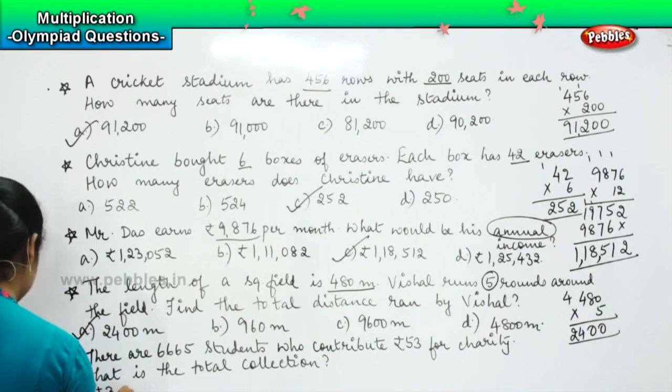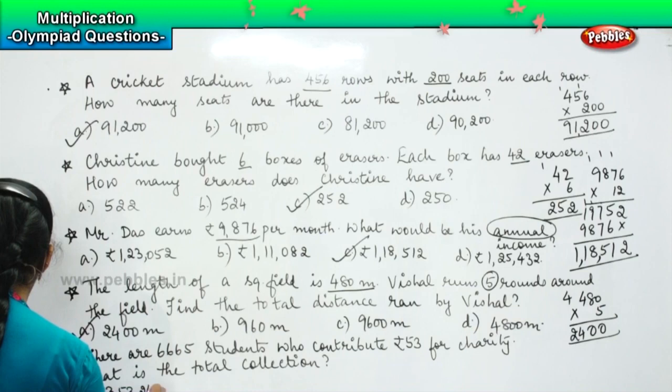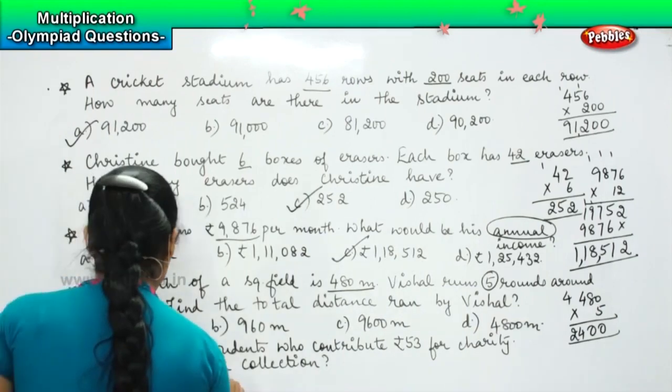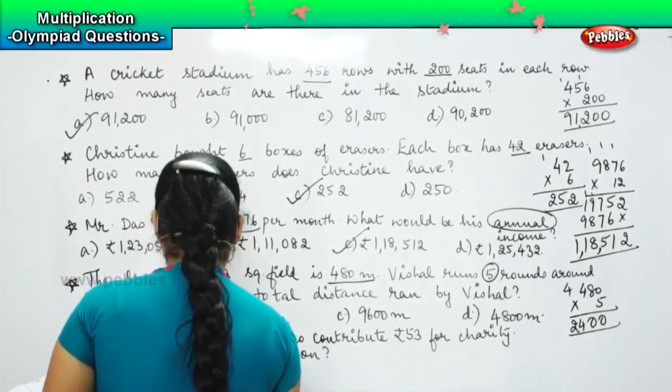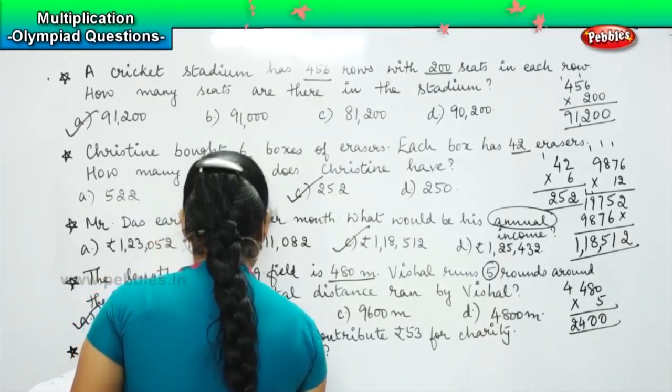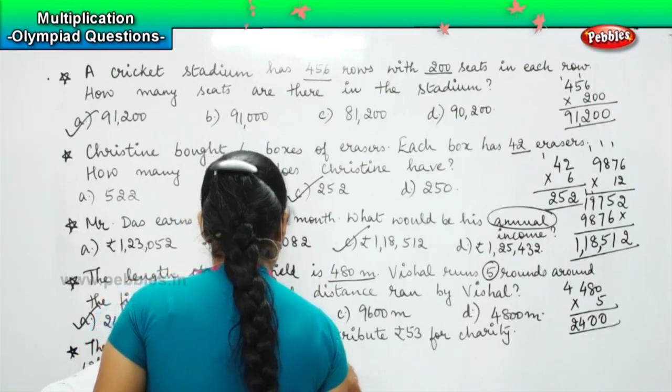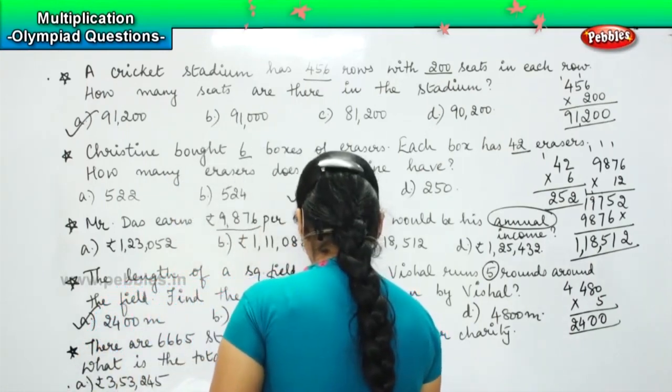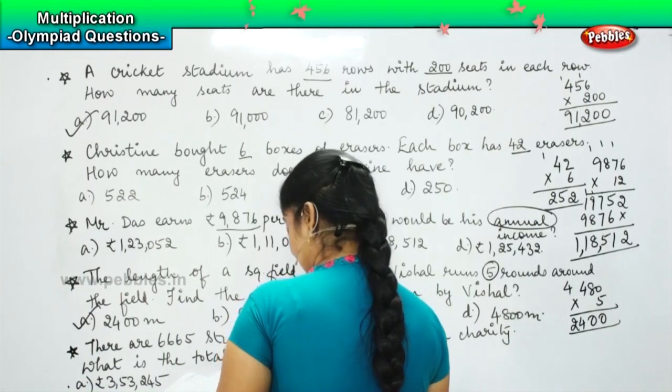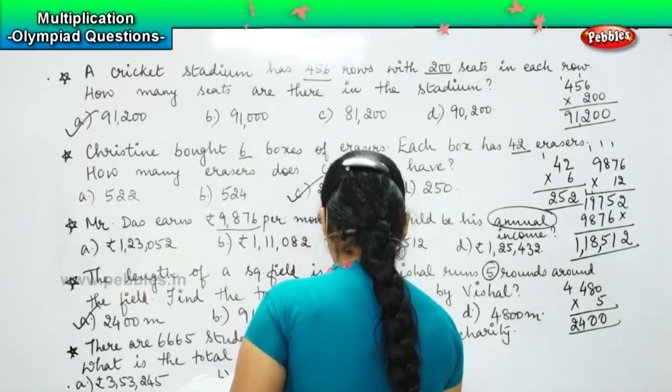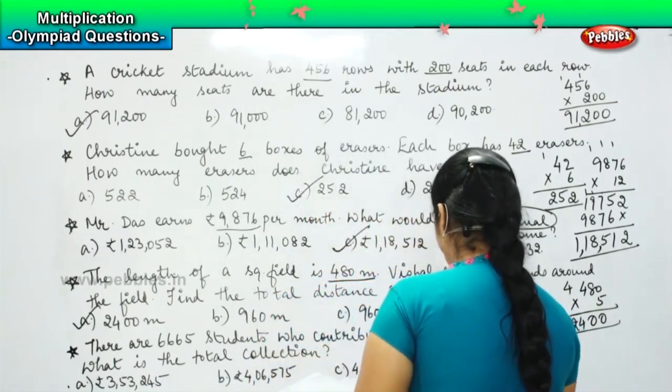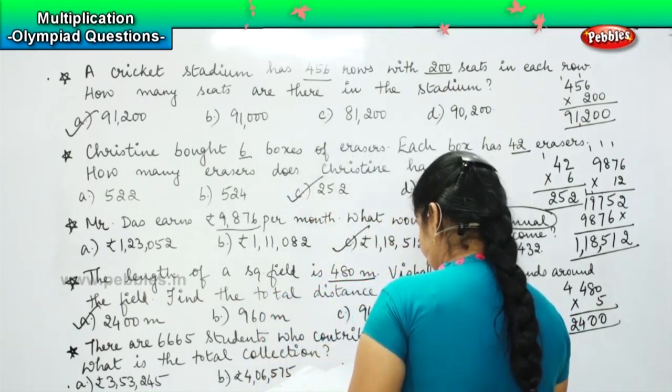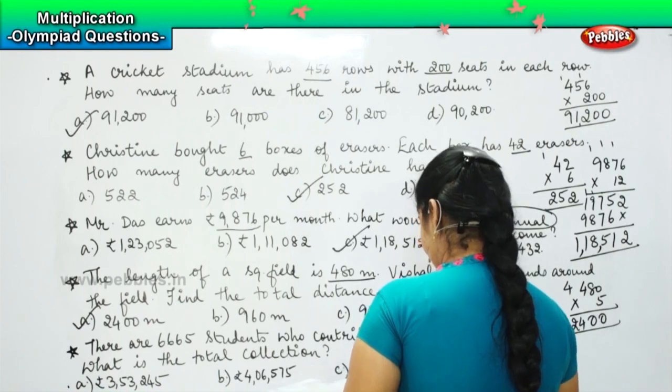And your options are: option A, rupee 3,53,245. Option B, rupee 4,06,575. Option C, rupee 4,26,575.